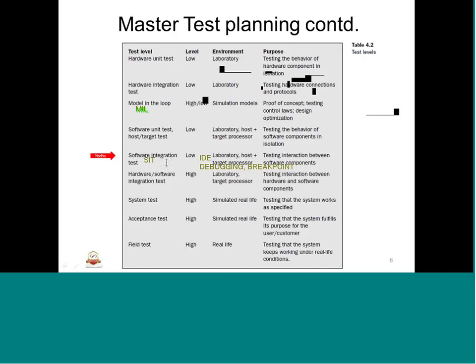After SIT, the next level is hardware-software integration (HSI), where we focus on the entire system behaving when integrated with software components. In SIT we focus only on software-to-software interaction, whereas in HSI we focus on software-to-hardware or hardware-to-software interaction. We use the same lab equipment, measurement equipment, and the target board with simulation to verify that the software is working fine on the end target system.